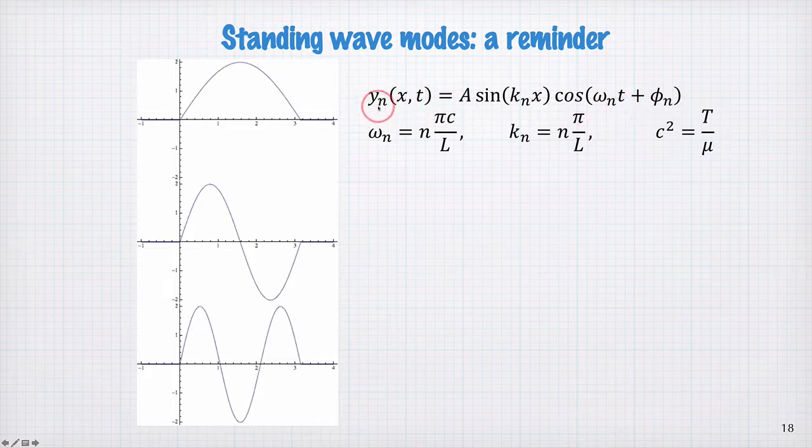Where the nth mode, y_n(x,t), can be given by some amplitude with the spatial dependence sine(k_n x), and the time dependence cos(ω_n t + φ_n). So the frequency ω_n depends on the mode index, the speed of the wave on the string c, and the length of the string L. c is given by this equation here with the tension and linear density. The wave vector k_n is this depending on n and L.